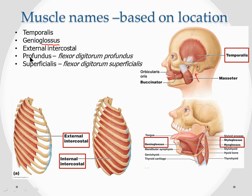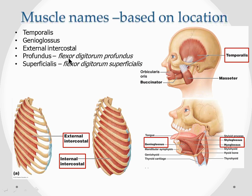We use the words 'profundus' or 'superficialis' to indicate depth. The word profundus comes from 'profound' - something deep. Profundus means the muscle is deep; superficialis means the muscle is superficial. For example, flexor digitorum profundus - 'flexor' means it's a flexor, 'digitorum' means it goes to the digits, and 'profundus' means it lies deep. Flexor digitorum superficialis is also a flexor of the digits but lies slightly superficially. These two muscles are together - one superficial, one deep - and they belong to the hand.